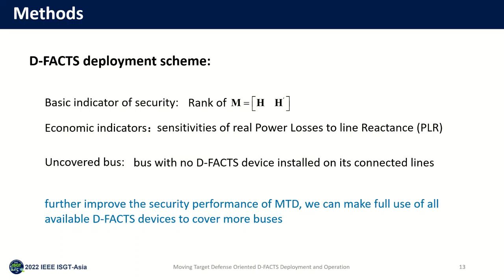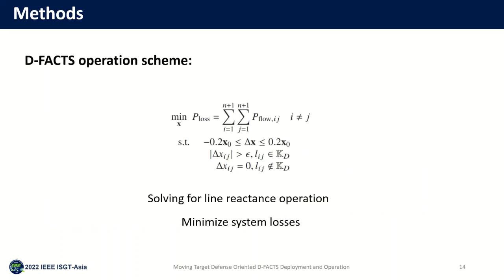We define a bus with no defect device installed on its connected lines as an uncovered bus. An attack against this bus can still cause harm to the system. Based on this, we use the remaining devices to protect more uncovered buses to enhance the security of the system. After the deployment scheme is determined, we further optimize the amount of variation of line reactances and solve for the optimal line operation to minimize the system losses. Through these two steps, we obtain the defect deployment and operation scheme with good performance in both security and economy.